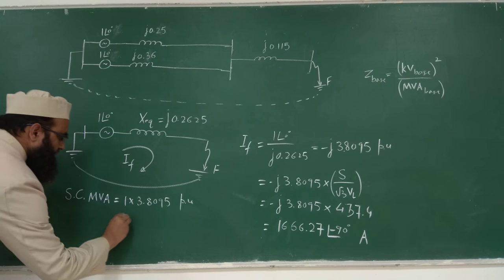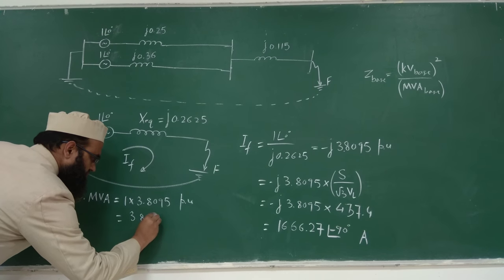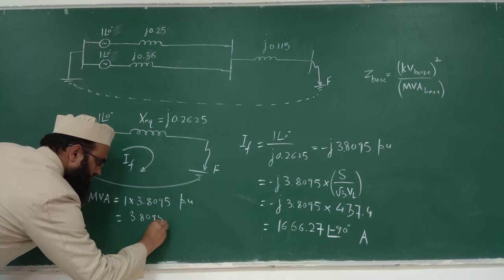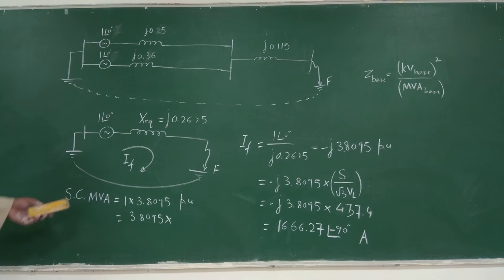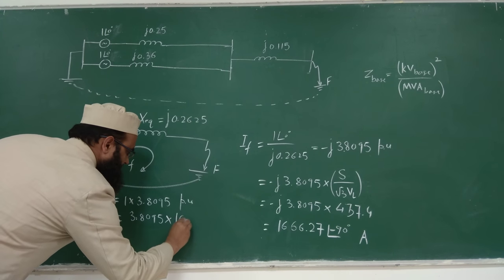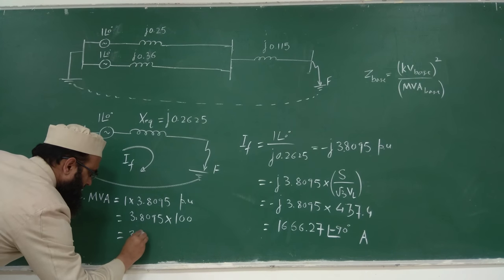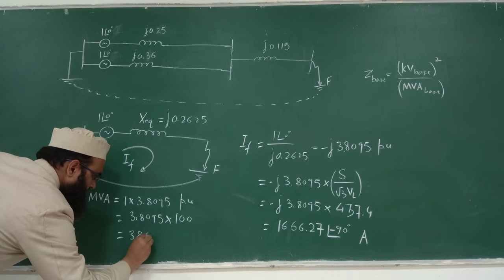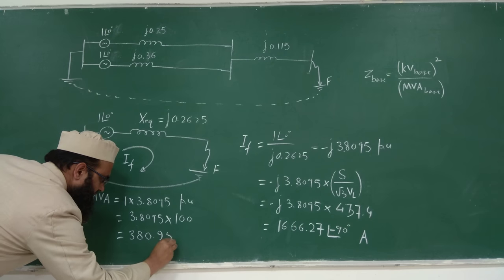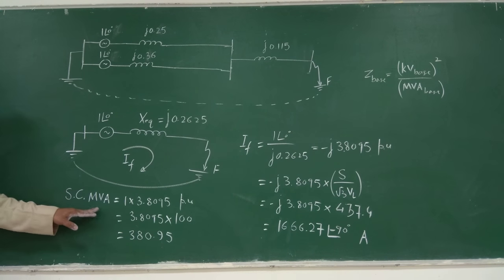Short circuit MVA actual = 3.095 × 100 MVA (base) = 309.5 MVA. So the actual short circuit MVA or fault MVA is approximately 380.95 MVA. This is the fault level at the point of fault.